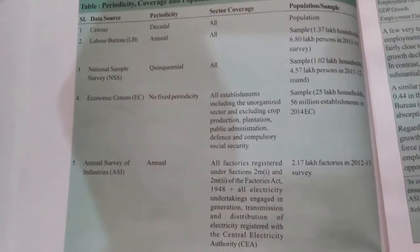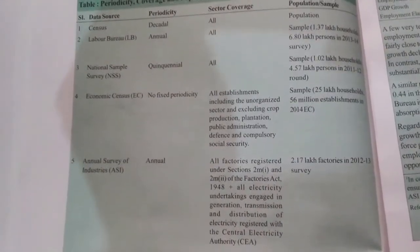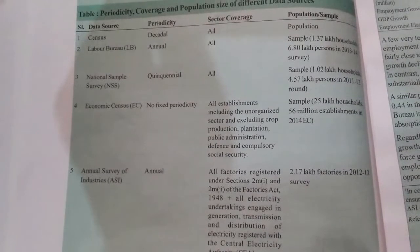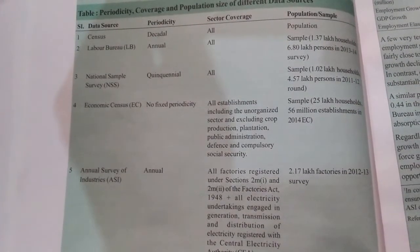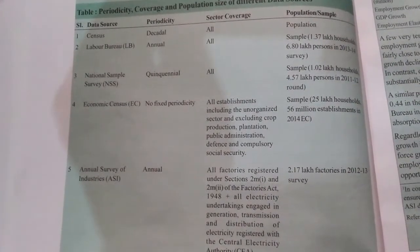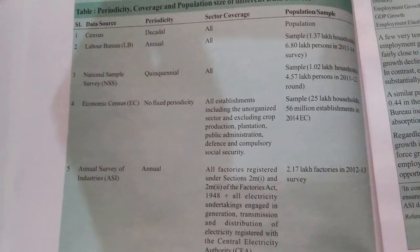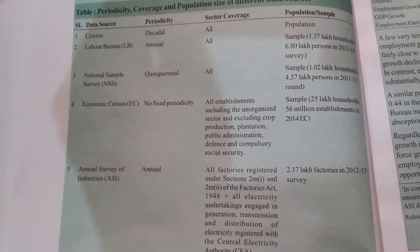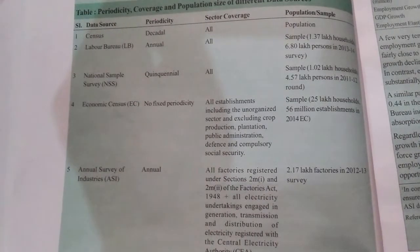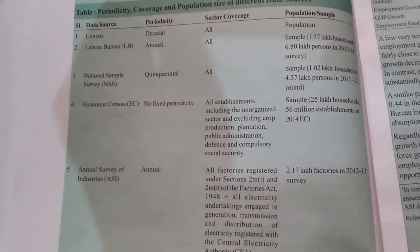These are the five sources of measurement of unemployment in India. The first is Census. Periodicity is decadal, that is every 10 years. Sector coverage: all. Population sample: population.